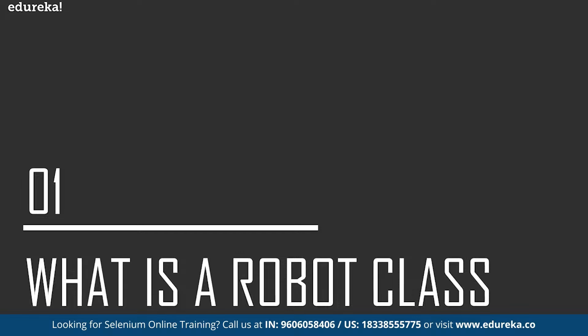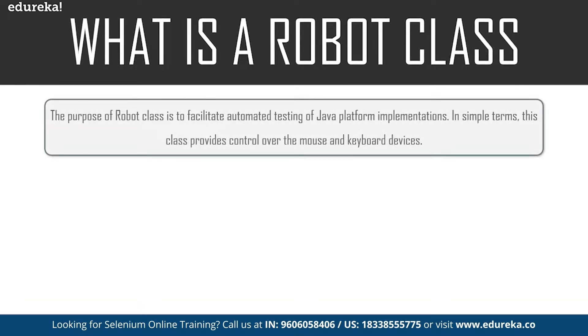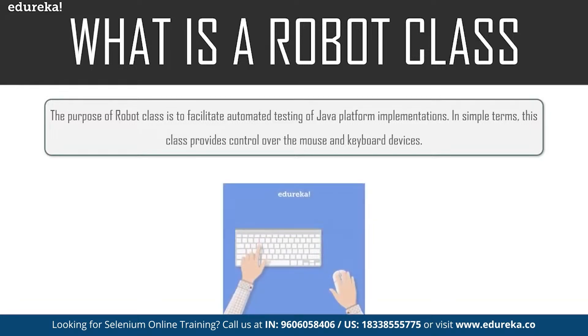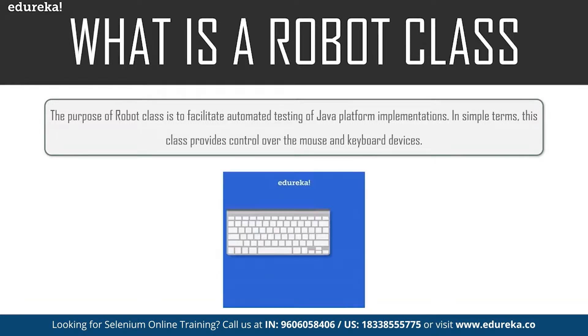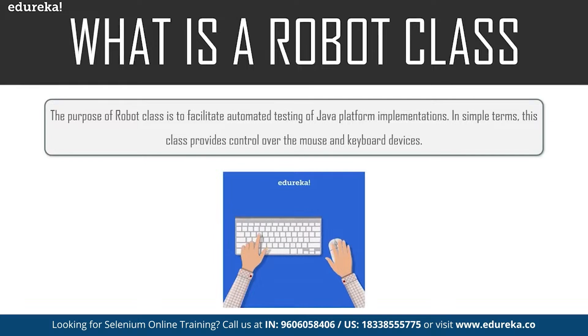Time plays a major role while testing and we need to make sure that we complete the desired task within a specific time. A robot class is used to generate native system input events for the purpose of test automation, self-running demos, and other applications where control of mouse and keyboard is needed. The primary purpose of this robot class is to facilitate automation testing for the Java platform. In simple terms, this class provides control over the mouse and keyboard devices and can handle pop-ups during execution.